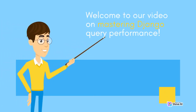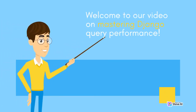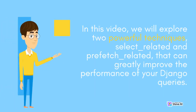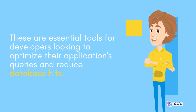Welcome to our video on mastering Django query performance. In this video, we will explore two powerful techniques, select_related and prefetch_related, that can greatly improve the performance of your Django queries. These are essential tools for developers looking to optimize their application's queries and reduce database hits.